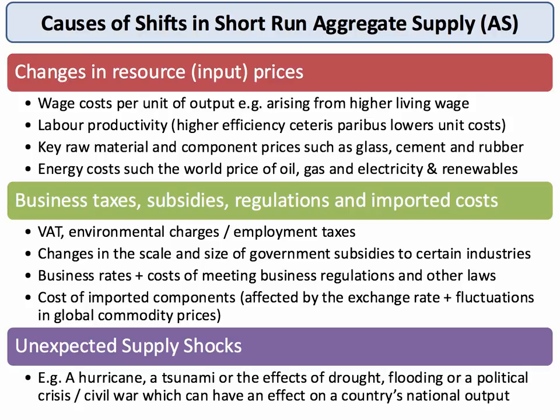Also important — shown here in green on the slide — are changes in taxes, subsidies, and regulations. For example, environmental taxes, carbon taxes, or an increase in VAT, which is a tax on suppliers, would affect their costs. Government subsidies would have the opposite effect of taxes, cutting costs instead of increasing them.